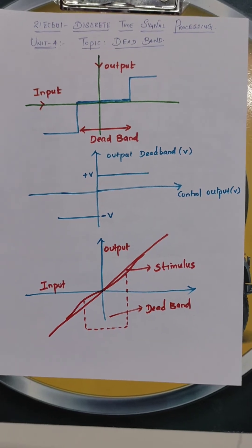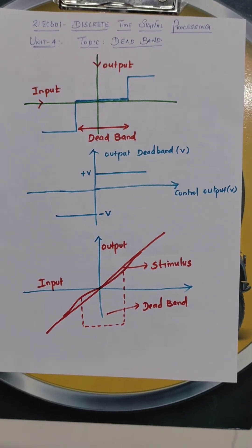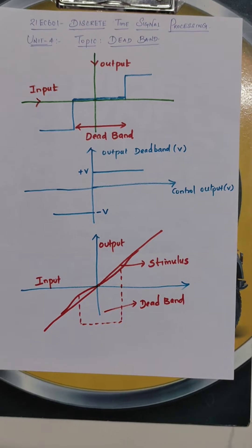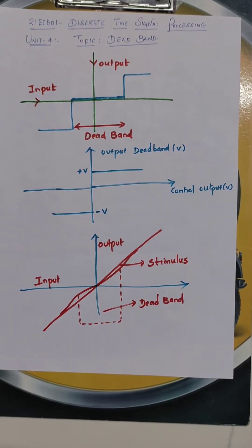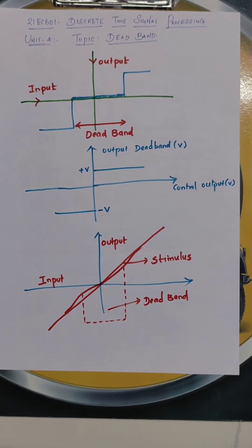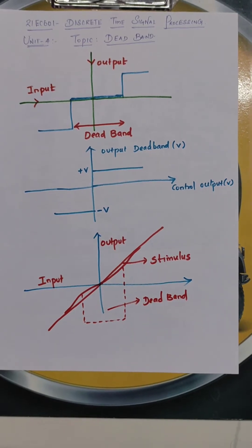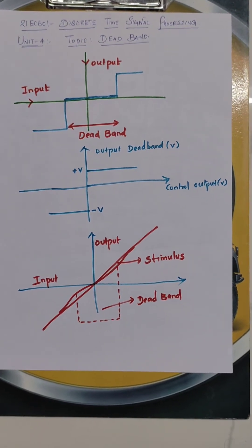The important topic is called overflow error. In that overflow error, we have limit cycle oscillation and deadband filters. We are going to see about the deadband. Students are remembering only deadband, the formula based questions.